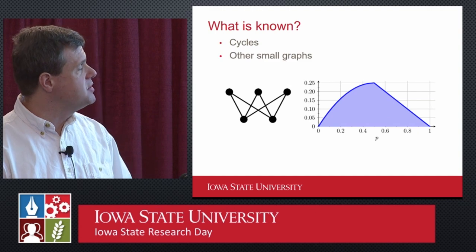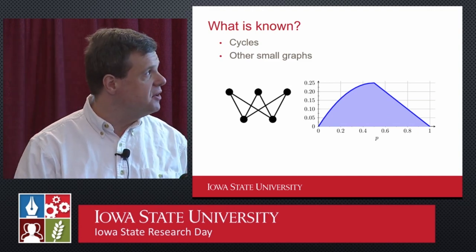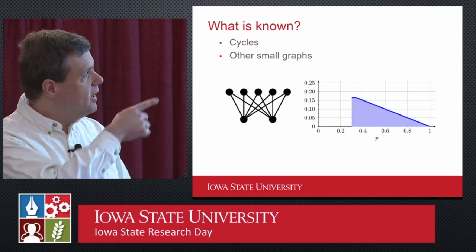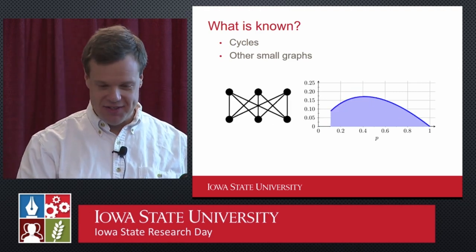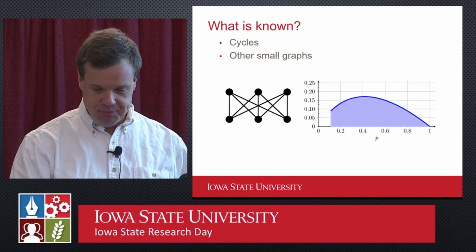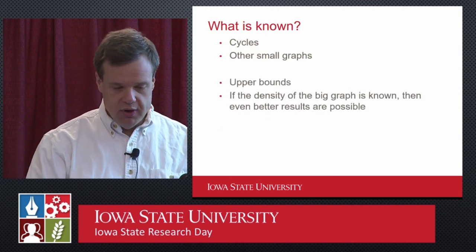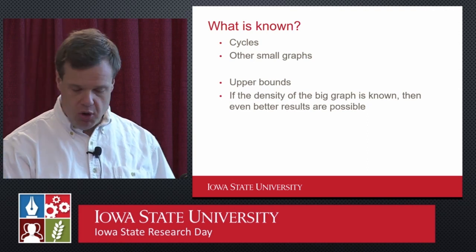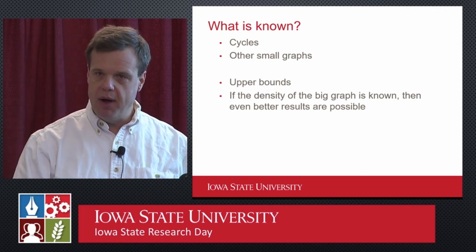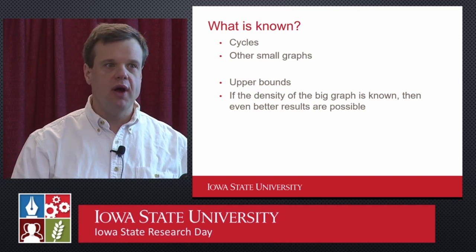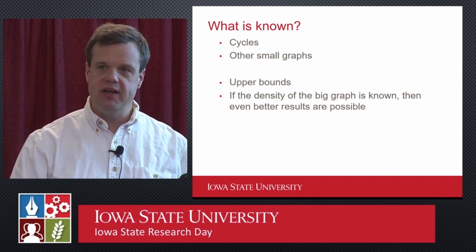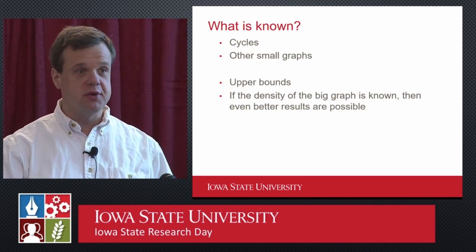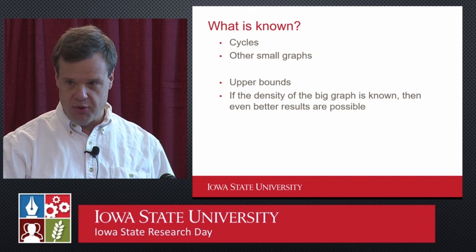There are some other examples here and some strange results, including a flat spot here which we didn't expect. So what we're interested in is — we have some upper bounds, and we know some small graphs, but there isn't a black box for this. For every new graph that we want to exclude, we need new techniques and new information, and we need to know which graph to exclude before we begin our process.